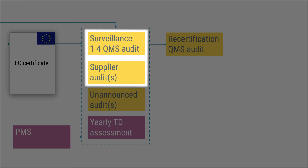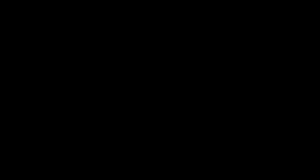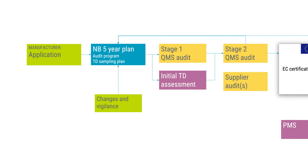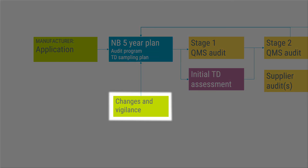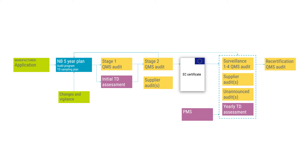The coming surveillance audits shall be done within 12 months after the previous audit. These surveillance audits shall also cover potential critical supplier audits as decided and included in the notified body's audit program. A supplier audit can also be required with the initial stage two audit. At least one unannounced audit shall be done by the notified body during each certification cycle. The manufacturer is obliged to report changes in their QMS and product portfolio to the notified body. Any potential vigilance events and the mandatory PSURs shall also be reported to the notified body. All this information serves as input to the notified body's 5-year plan and can be potential triggers for extra TD assessments, special assessments, extra audits, or even unannounced audits — which can also be conducted at the manufacturer's critical suppliers.